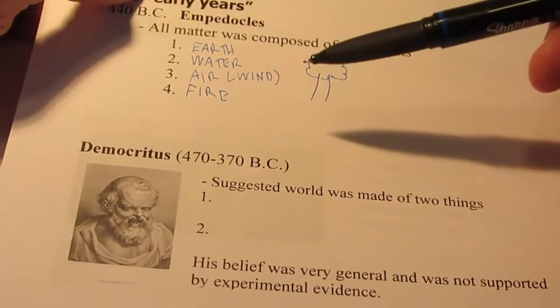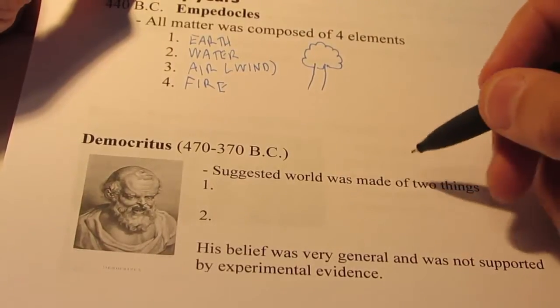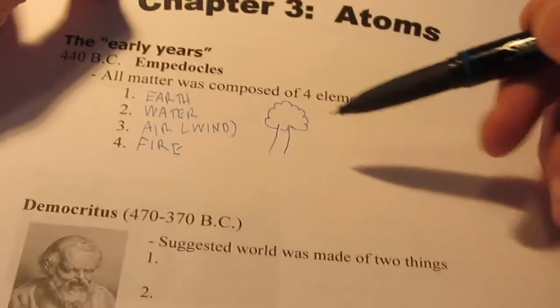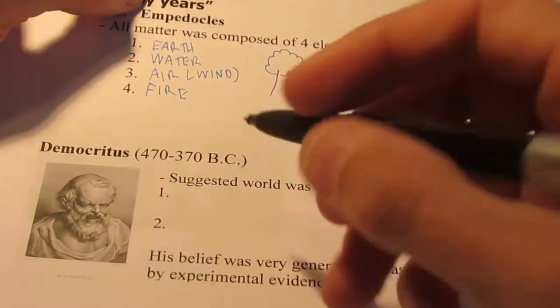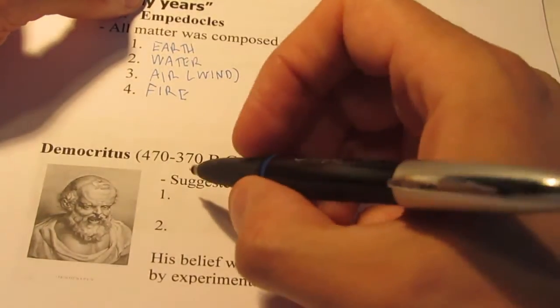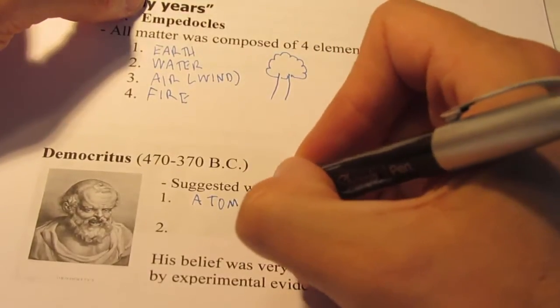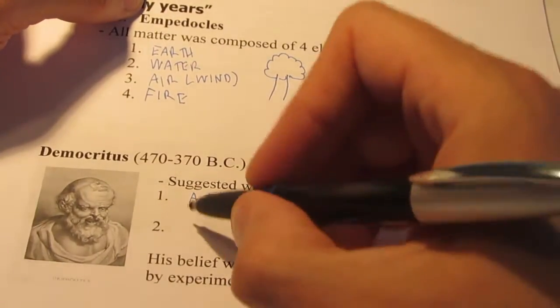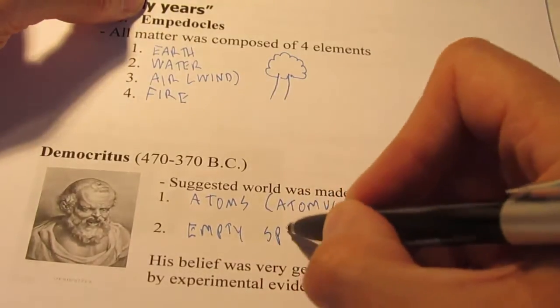Now, around the same time, another Greek philosopher called Democritus suggested that the world was only made up of two things. He did not have any experimental evidence like Empedocles had. But Democritus didn't have any way to prove this. He believed that all matter was composed of two things. Are you ready for this? Tiny, indivisible particles he called atoms. Isn't that interesting? And that came from the Greek word atomis. And then he also thought that matter was composed of a lot of this: empty space.